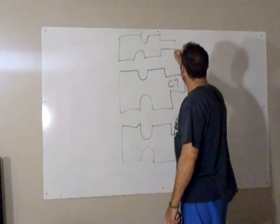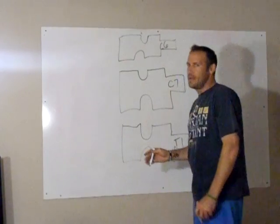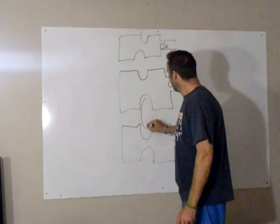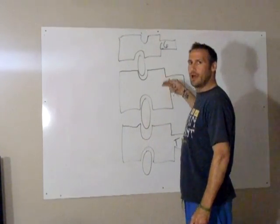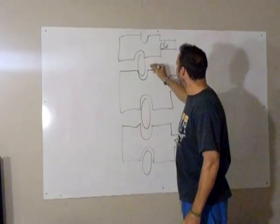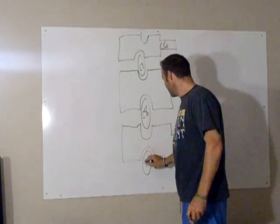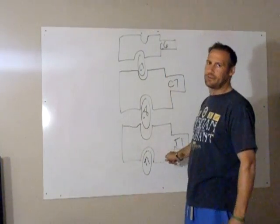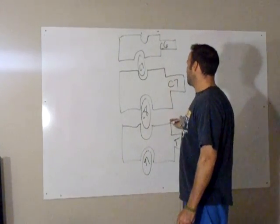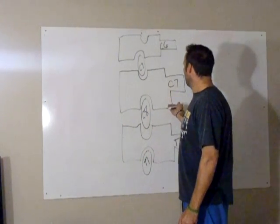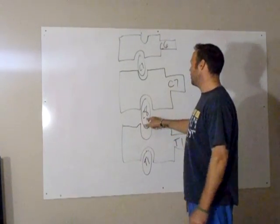Draw C7 here, C6 there, and T1 there. Going back to what we already know: cervical nerves exit above, so C7 nerve root would be above the C7 vertebra. That means C8 is here, and then T1 is below. In the thoracic region, all nerves exit below, just like in the lumbar region. So the question would be: what nerve exits the inferior pedicle of C7? That would be the C8 nerve root.